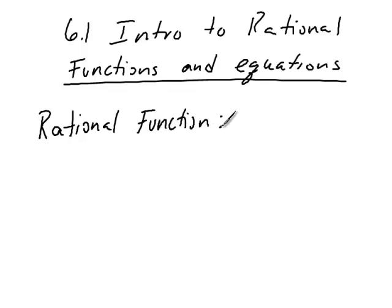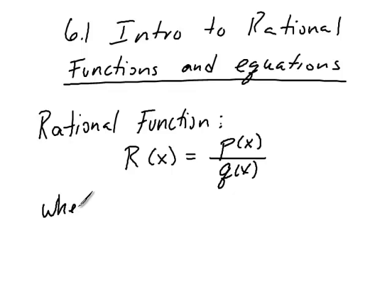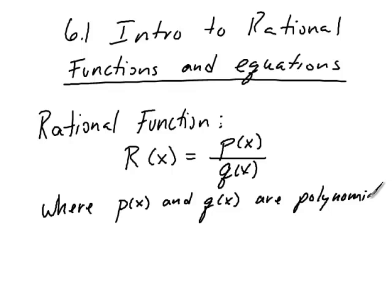So we're going to be dealing with functions that have the form of a fraction. So every rational function is in a particular form. We'll use R of X just for rational. And we'll say that it's P of X over Q of X, where P of X and Q of X are polynomials and Q of X cannot equal zero. Because if Q of X does equal zero, then we're dividing by zero. And remember that we can't do that, it's against every rule that we have for algebra. Things blow up when we divide by zero. So we just can't do it.